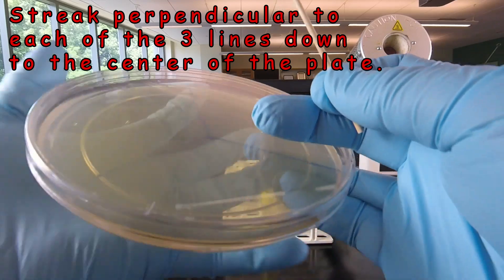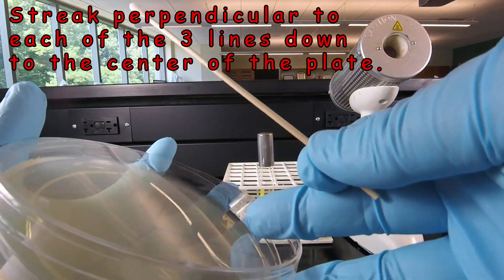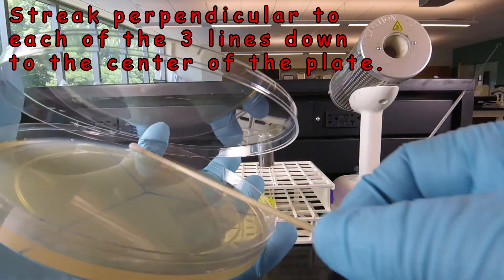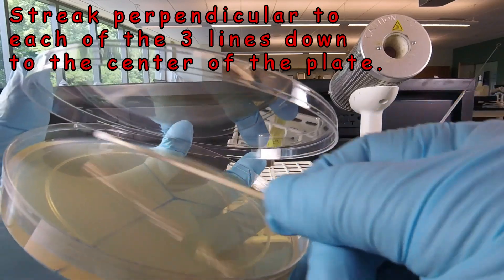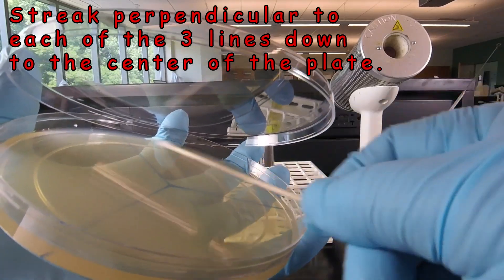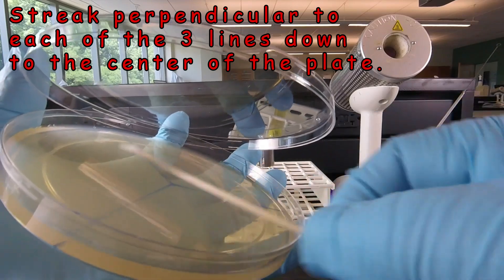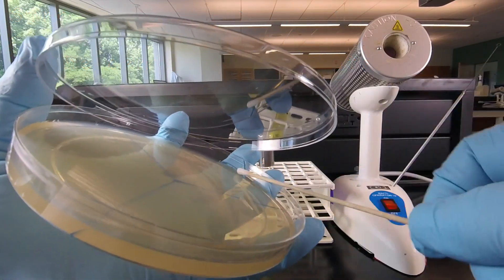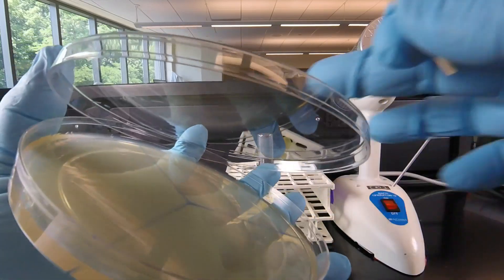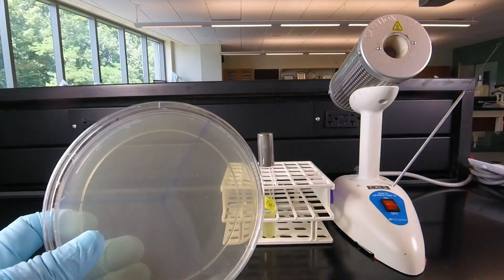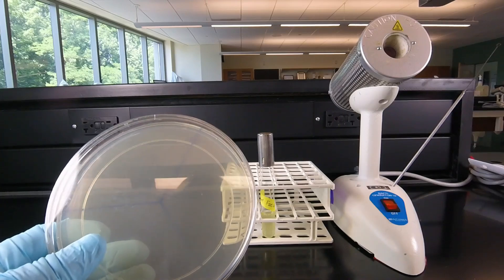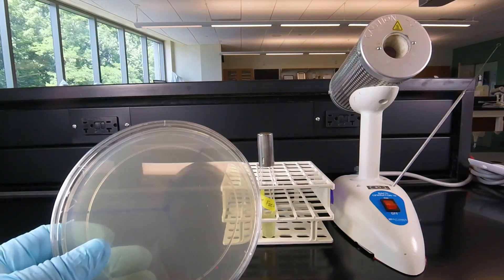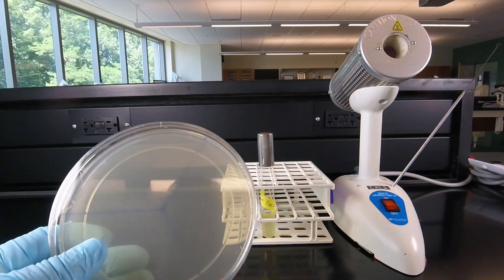And finally rotate it to the last line, and streak perpendicular to that line. All the way to the edge of the plate. And all the way down to the center. And now we've inoculated the plate, so that the whole plate will show solid bacterial growth next time.